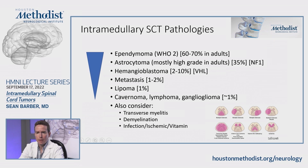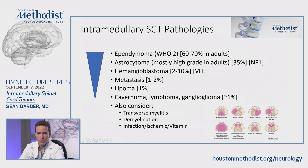Astrocytoma is second most common, accounting for about 35% of cases. In adults, most of these are high grade, whereas in children most astrocytomas are low grade. Most of these tumors are sporadic, occurring due to random mutation, but there are familial syndromes like neurofibromatosis type 1 which can predispose you to these tumors — particularly intramedullary astrocytomas.